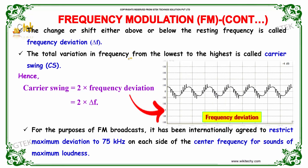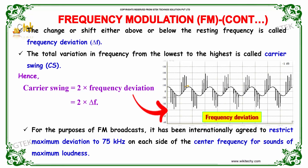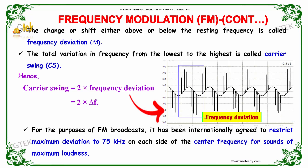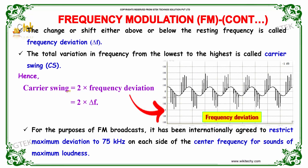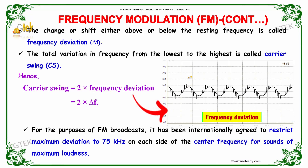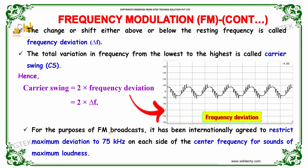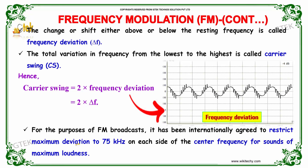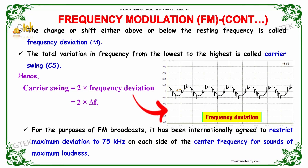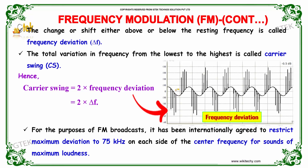The change or shift either above or below the resting frequency is called frequency deviation. The total variation in frequency from the lowest to the highest is called carrier swing. Carrier swing is equal to 2 times the frequency deviation, that is 2 × ΔF. For FM broadcast, it has been internationally agreed to restrict a maximum deviation to 75 kilohertz on each side of the center frequency for sounds of maximum loudness.